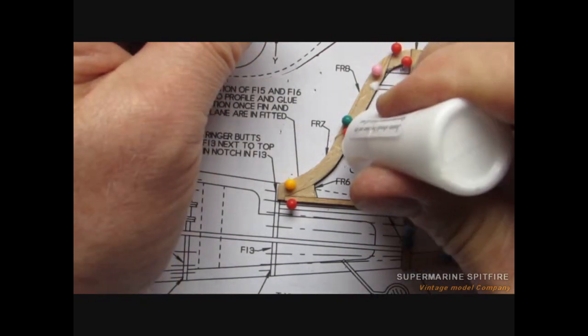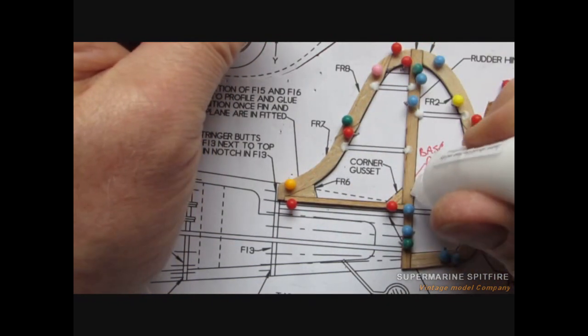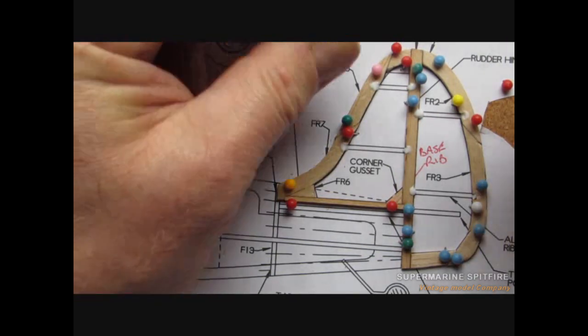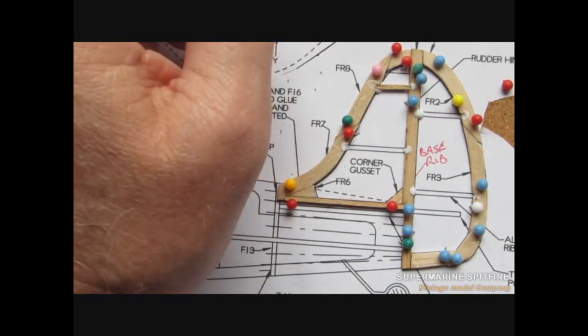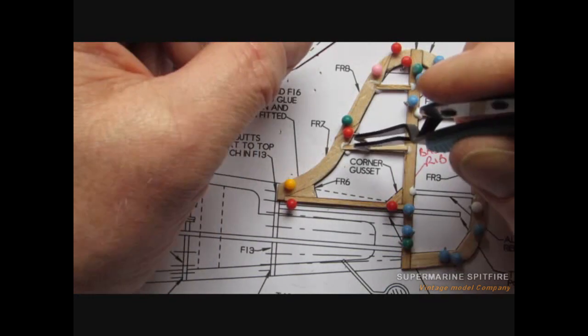And once you've done that, just make sure to add all your little spars and ribs going across the top there.